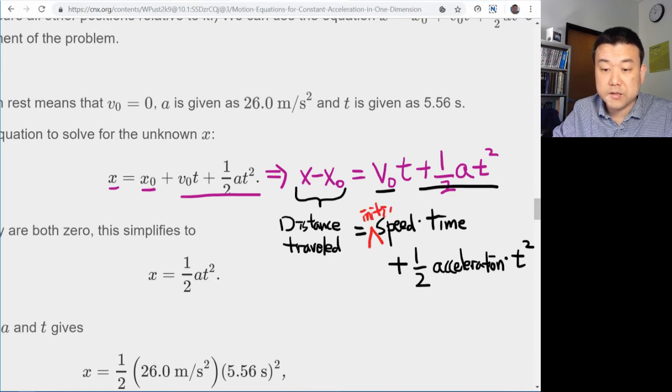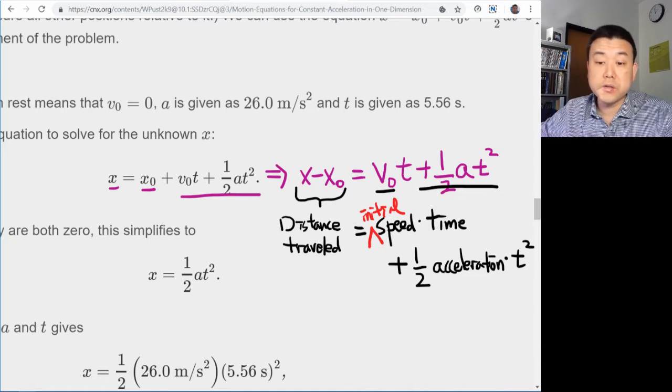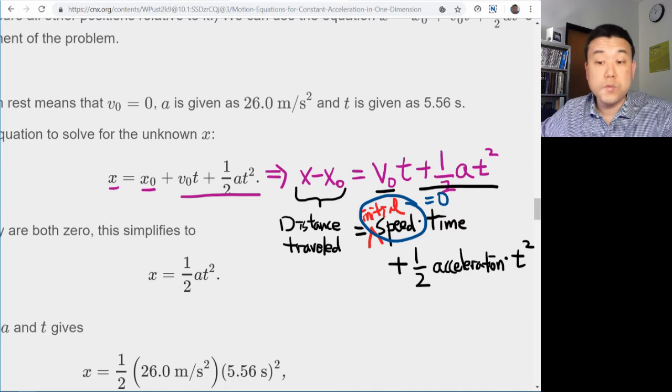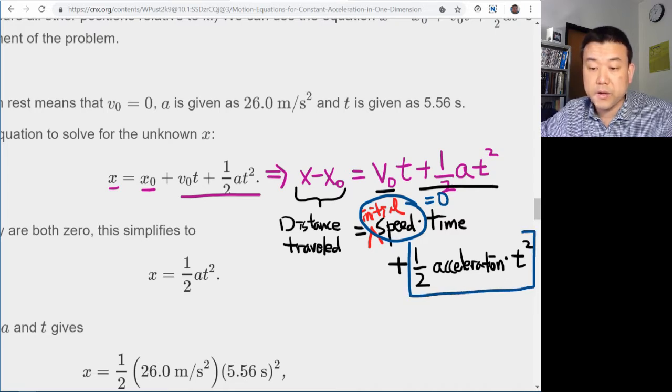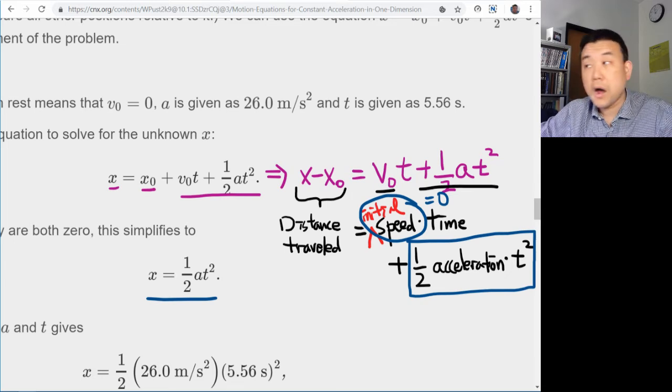So it's plus one-half acceleration times time squared. And one more thing that changes, this speed is the initial speed, what the object starts out moving at. So for the situation like one described in this example and in the homework question, your initial speed is zero. Which is why you only end up with this one-half acceleration times duration of time squared. And the textbook is giving you this equation.